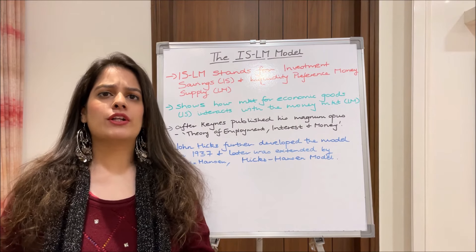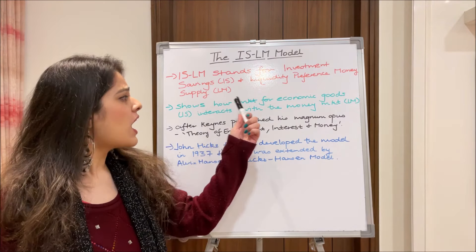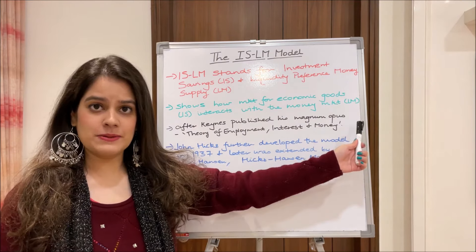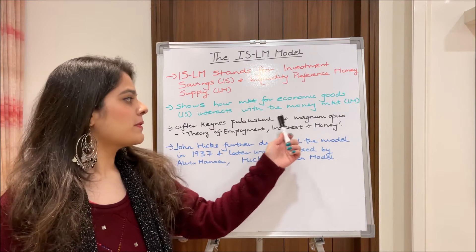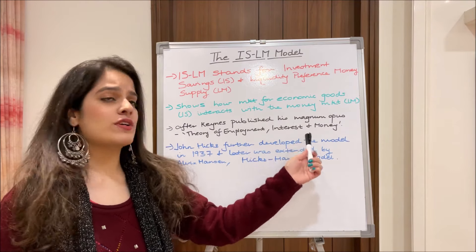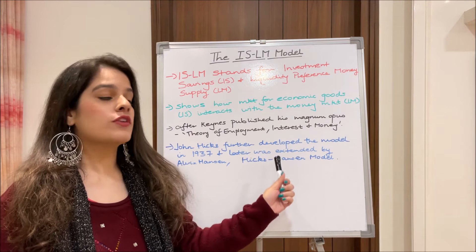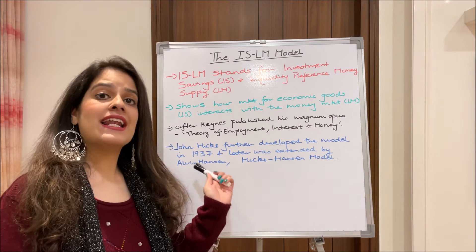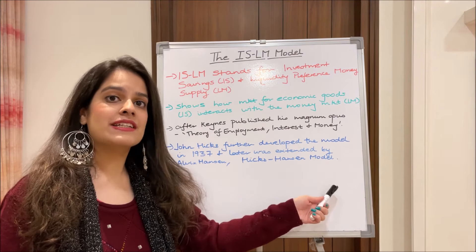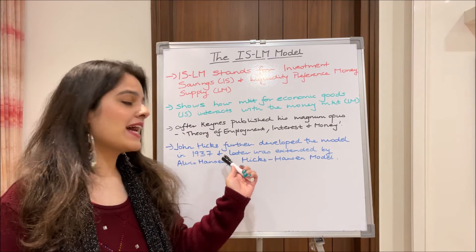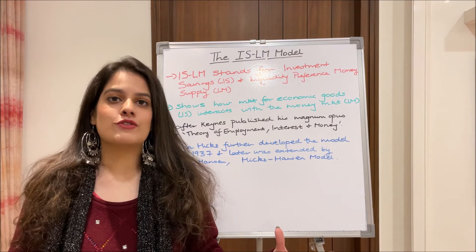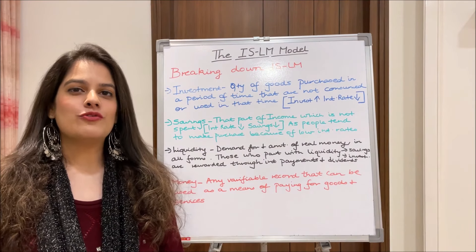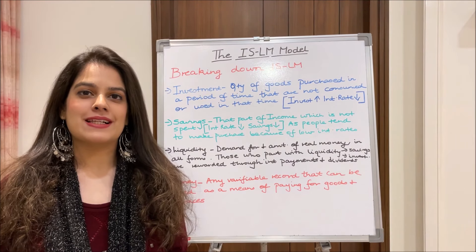This is a Keynesian macroeconomic model which shows how the market for economic goods interacts with the money market. After Keynes published his magnum opus — the General Theory of Employment, Interest and Money — this model was further developed by John Hicks in 1937, and later extended by Alvin Hansen. Hence, this model is also referred to as the Hicks-Hansen model.